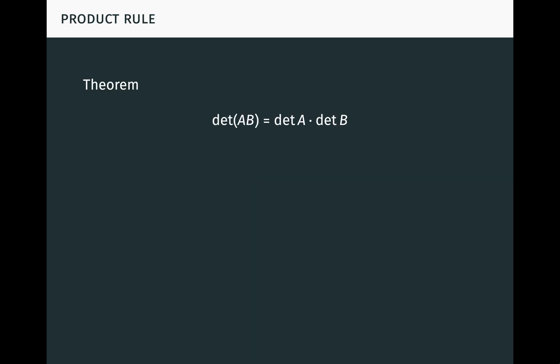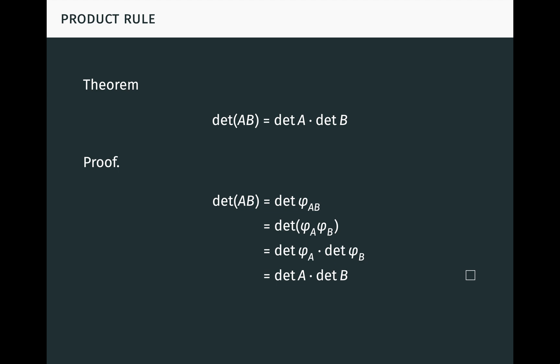For example, consider the fundamental product rule: the determinant of the product of two square matrices A and B is just the product of their determinants. For the proof, we observe that det(AB) equals det(φ_AB) by definition, which equals det(φ_A ∘ φ_B) because of the isomorphism between matrices and linear maps, which equals det(φ_A) · det(φ_B) by the product rule for determinants of linear maps, which equals det(A) · det(B) by definition. Note this proof requires no computation with the elements of the matrices.